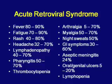Thrush — a cheese-like material on the tongue — can occur very early during HIV infection, including during acute retroviral syndrome, and someone might present with just that finding.